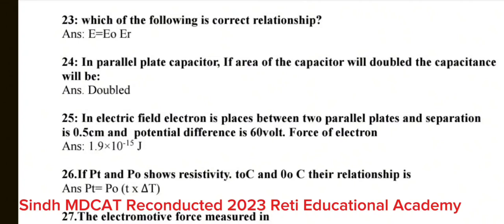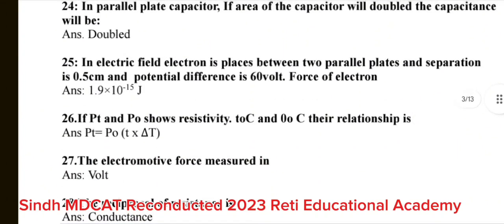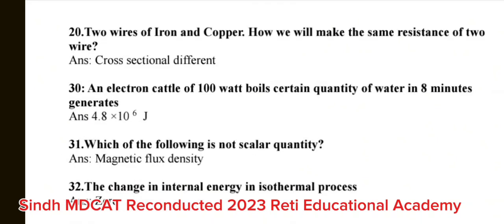Question number 26: If PT and PO shows resistivity to C and O 0 to C. Their relationship is? The correct answer is PT is equal to PO. Question number 27: The electromotive force measured in? The correct answer is volt. Question number 28: The reciprocal of resistance is? The correct answer is conductance. Question number 29: Two wires of iron and copper. How we will make the same resistance of two wires? The correct answer is cross sectional difference.